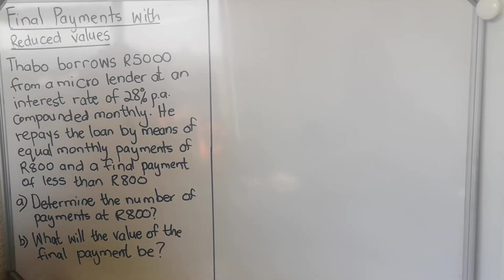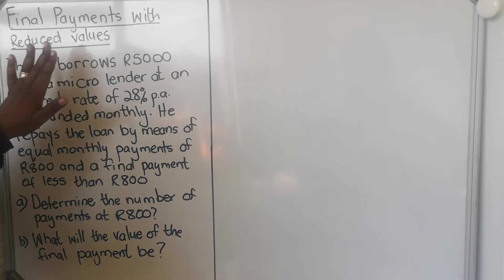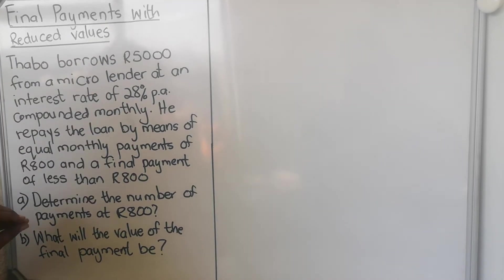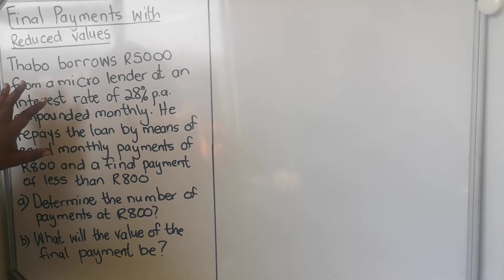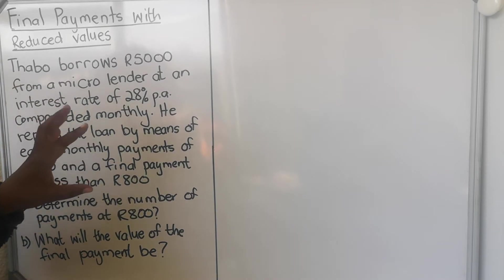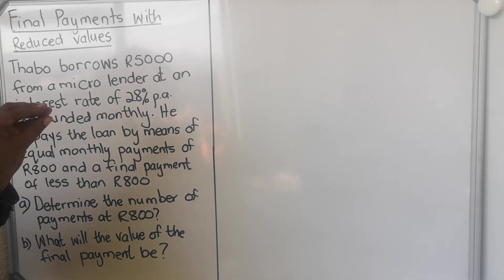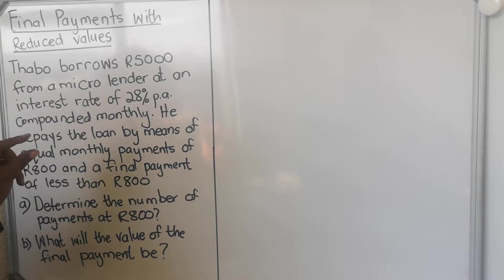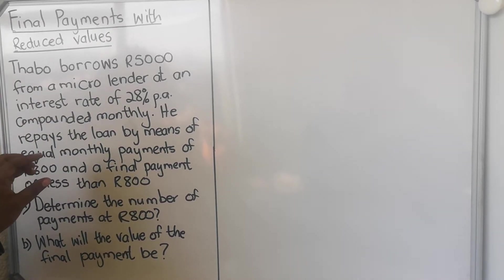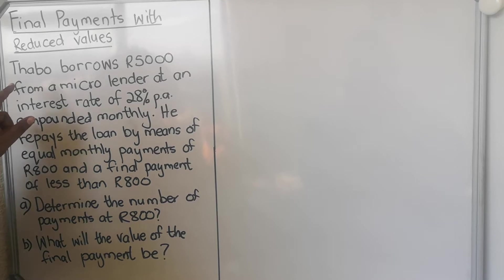Hello creatures, this is a financial maths video. The video is on final payment with reduced value, which means that you will pay a particular amount monthly until the last payment. The last payment will be reduced compared to the other ones, meaning that it will be less. So we're going to calculate that.